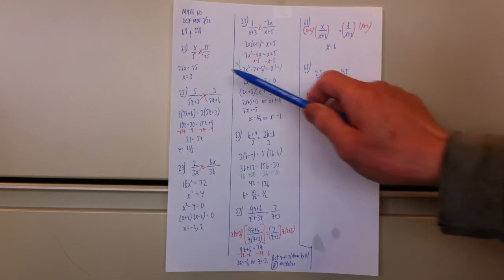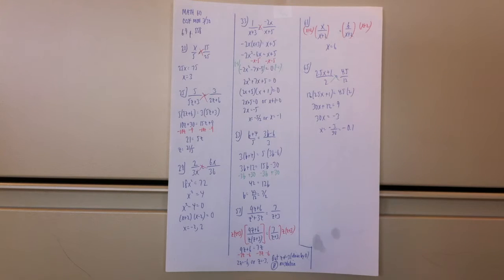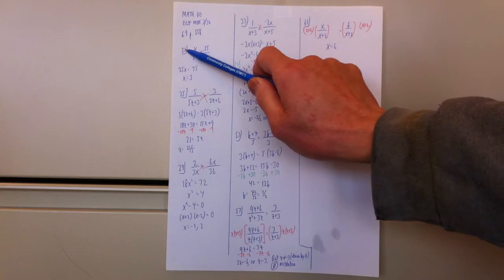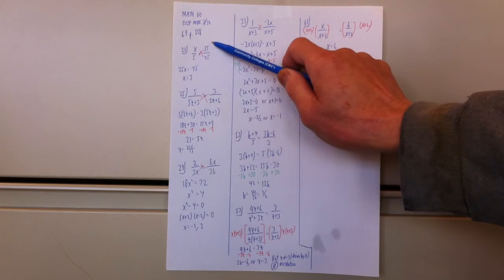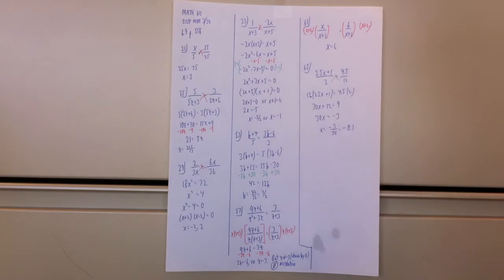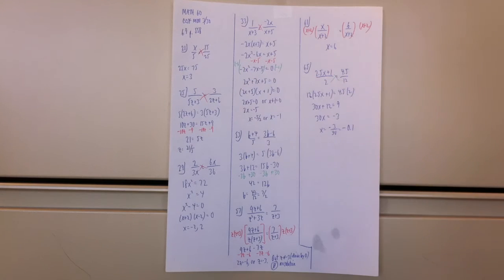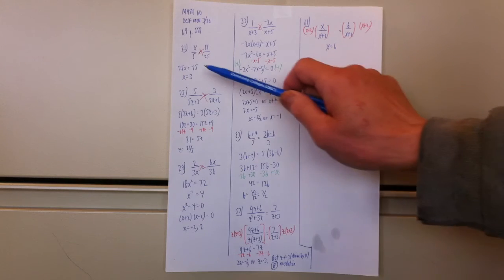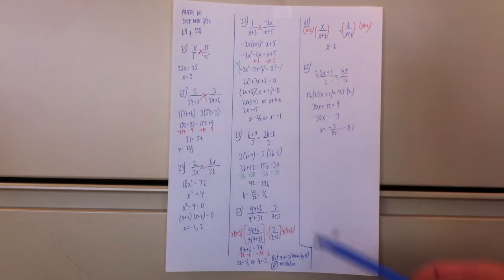For problem 21, x over 5 equals 15 over 25. We apply the cross multiply rule: x times 25, which is 25x, is equal to 5 times 15, which is 75. That leaves us with a fairly easy equation — divide both sides by 25 and you get x equal to 3. In this particular case there's no variable in the denominator, so I don't have to worry about plugging back in.